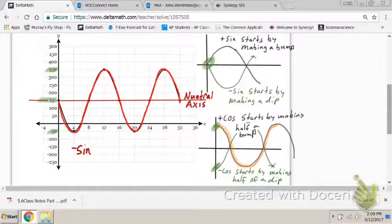These are either going to be sine functions or cosine functions. Since we've already established the neutral axis, it's pretty easy to figure out. This guy starts right here and starts going down. So that is a sine with a reflection. So I put negative sine.